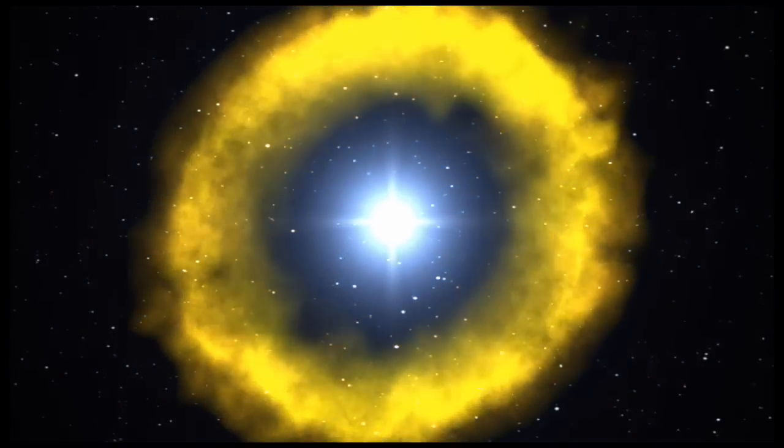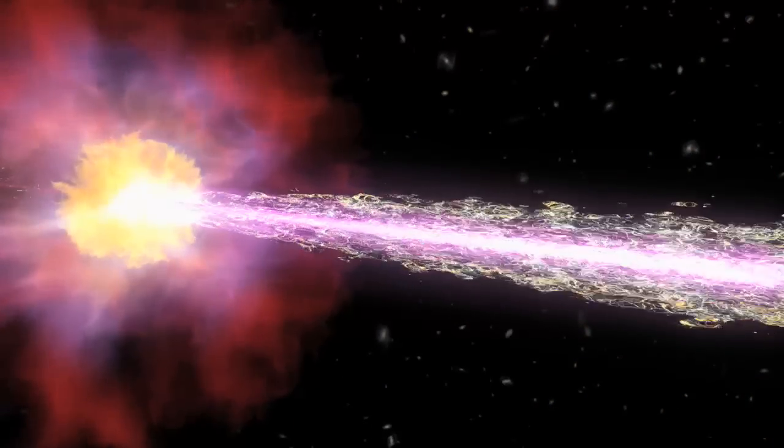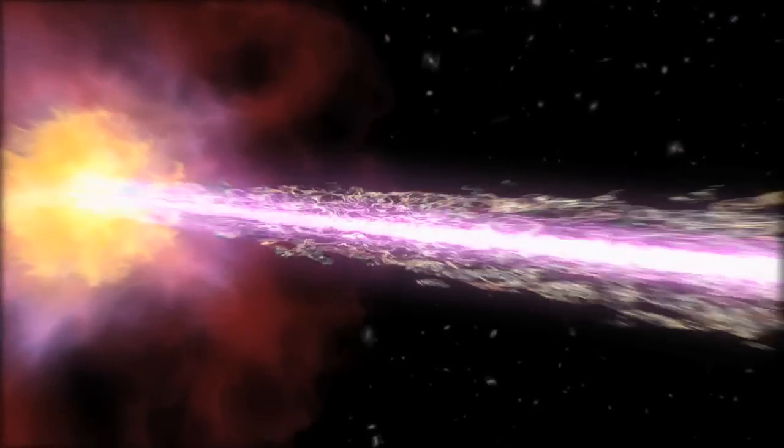We observed a gamma ray burst. A gamma ray burst is a huge explosion. That gamma ray burst produced a large number of photons, one of which had enormous energy, very short wavelengths. Those photons travelled seven billion years to reach us. And yet the highest energy, the shortest wavelength photon, arrived within 900 milliseconds of the lower energy photons.